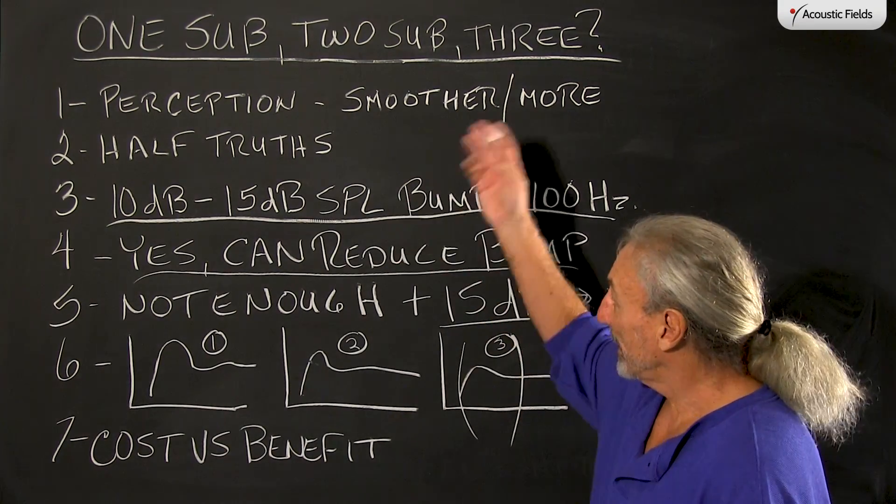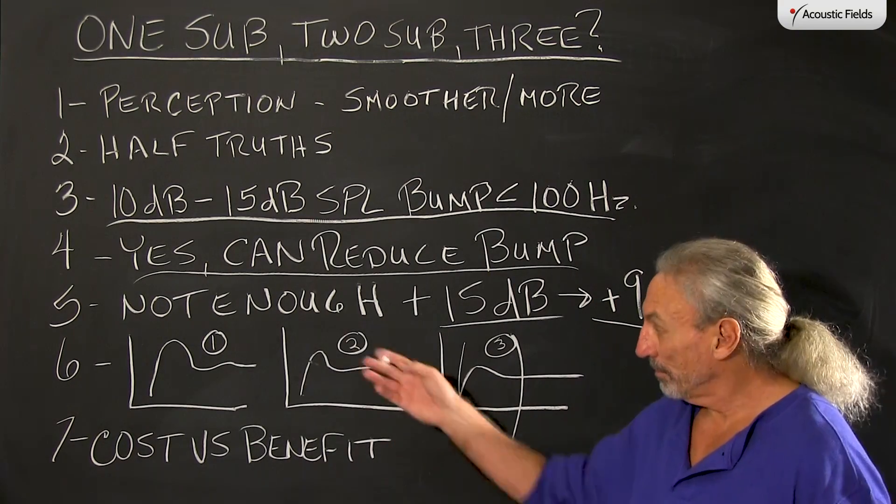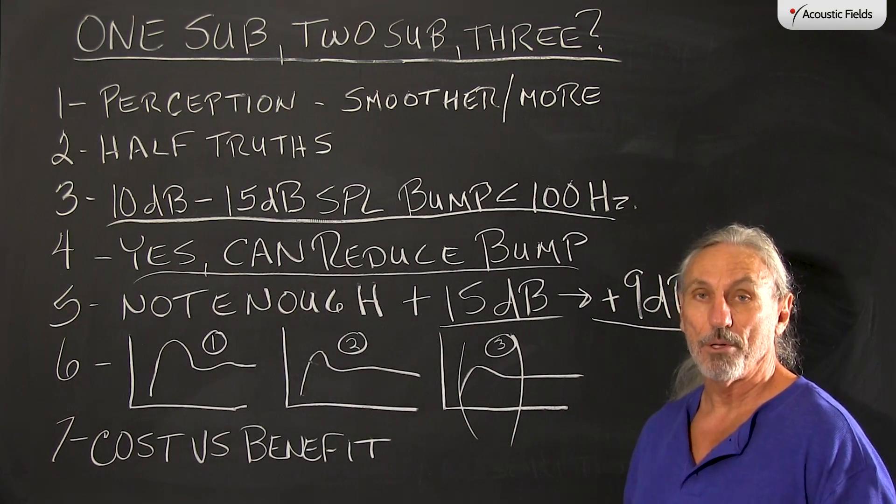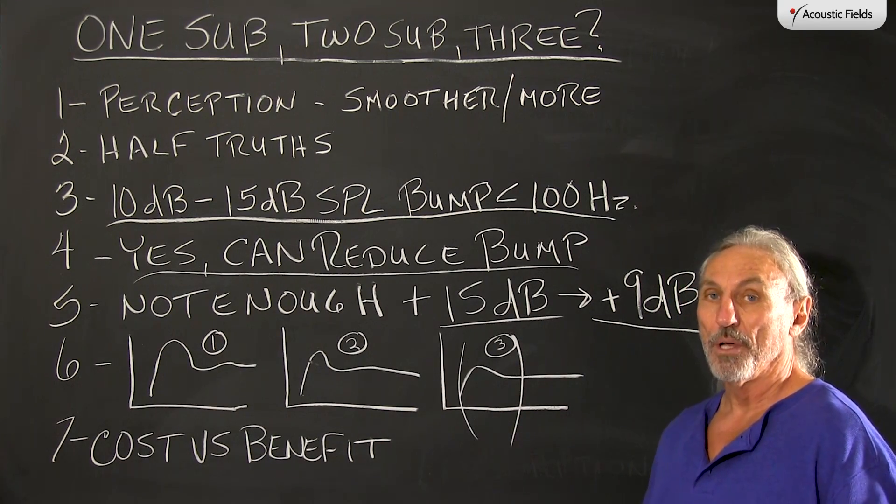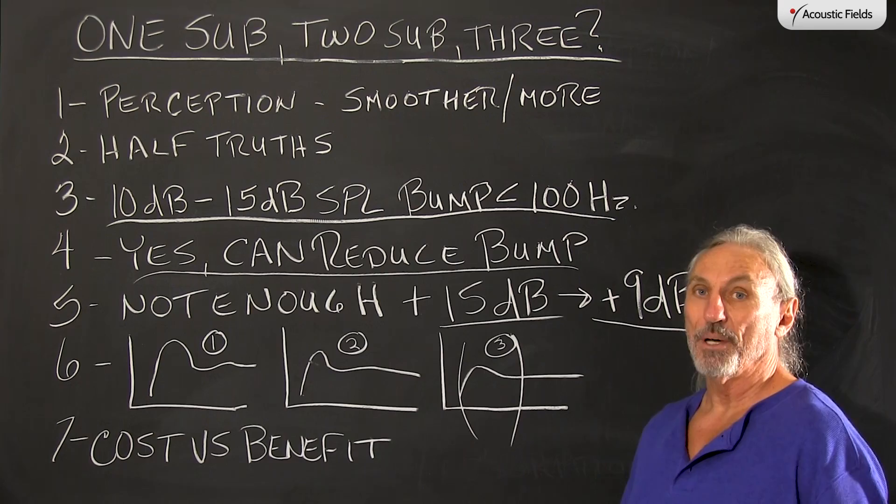So is adding more subwoofers a way to smooth out the low and below 100 cycles of a response curve? Yes and no. Yes, it reduces it, but no, not enough.